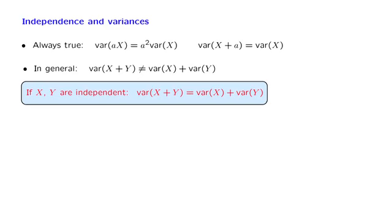Let us go through the derivation of this property. But to keep things simple, let us assume, just for the sake of the derivation, that the two random variables have zero mean. So in that case, the variance of the sum is just the expected value of the square of the sum.